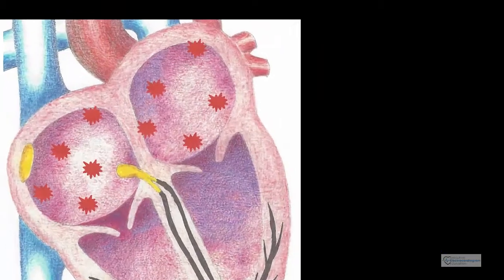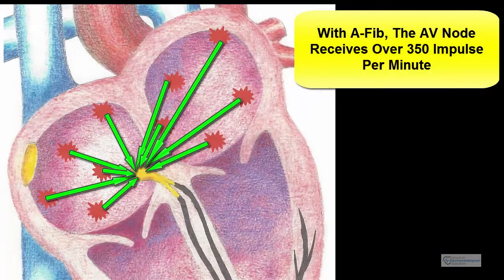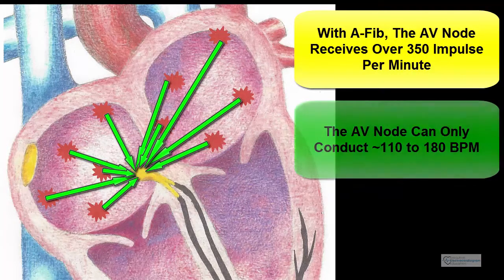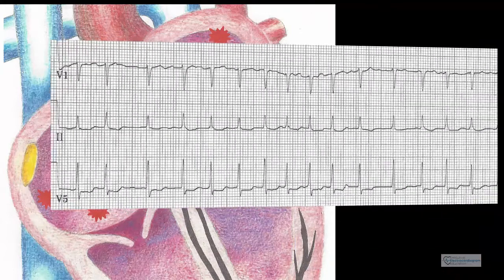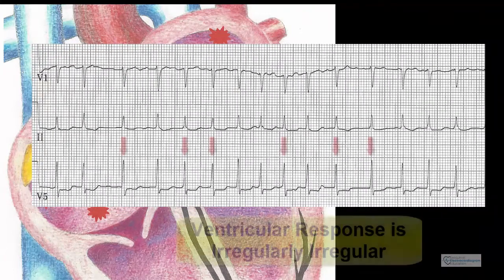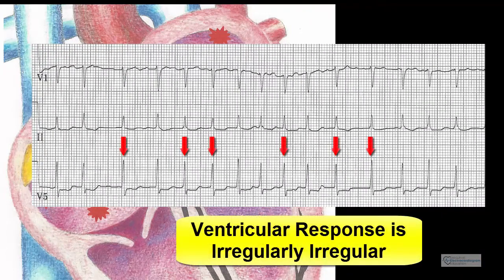The AV node is being bombarded by over 350 impulses per minute and cannot handle them all. In general, the AV node can only let through between 110 and 180 beats per minute, and therefore in a typical healthy AV node, you will see a rapid ventricular response. Since the impulses are coming so fast and from so many different sites, the ventricular response occurs at intermittent times, and the QRS complexes appear irregularly irregular.